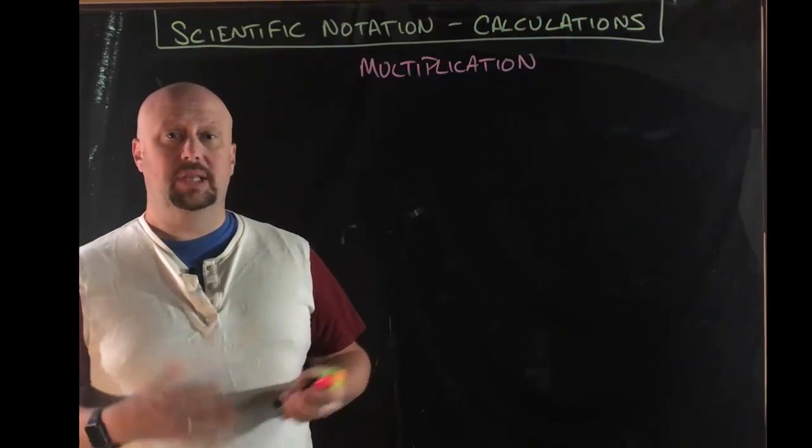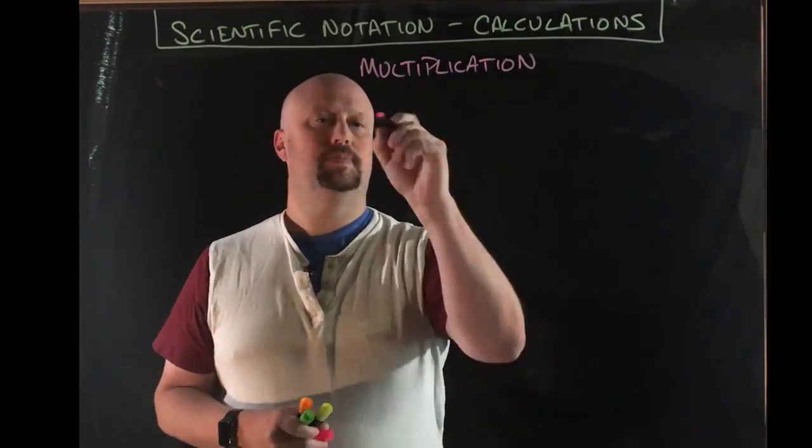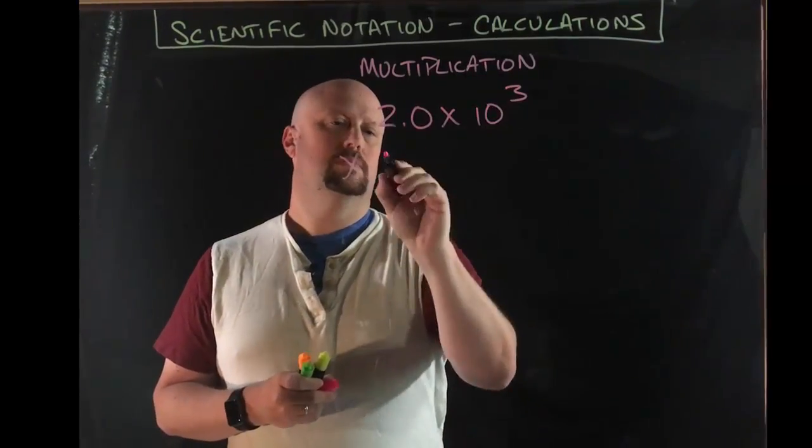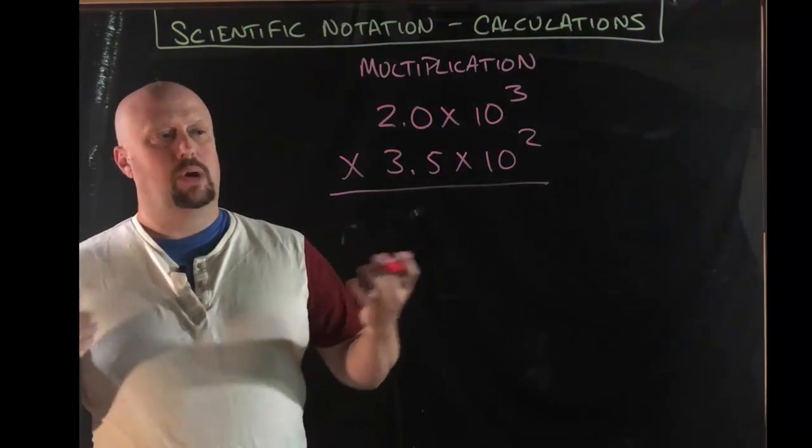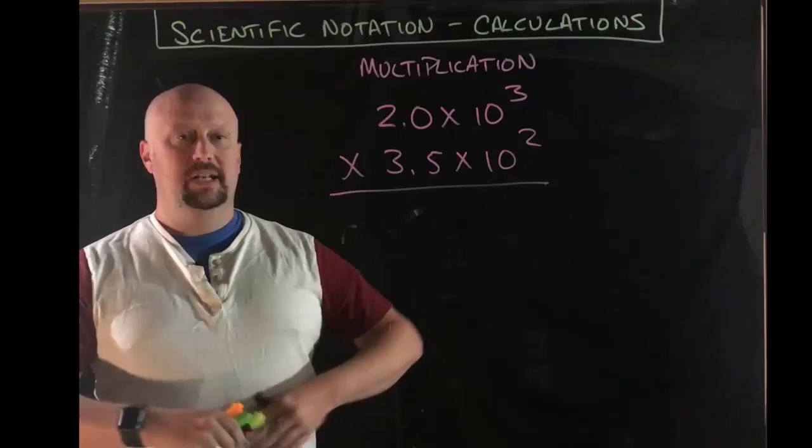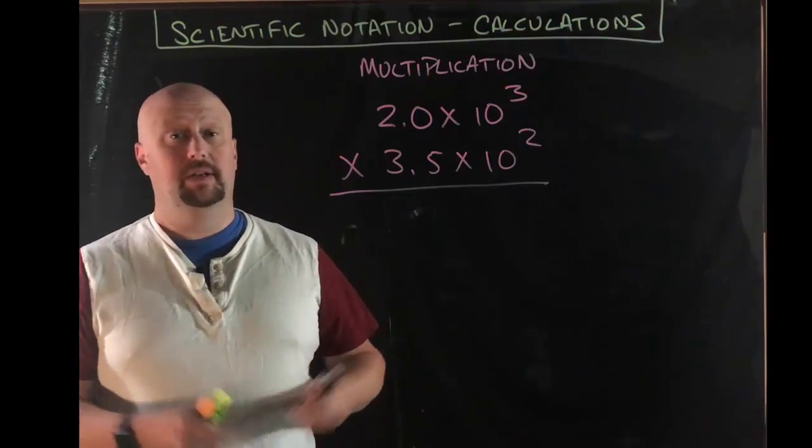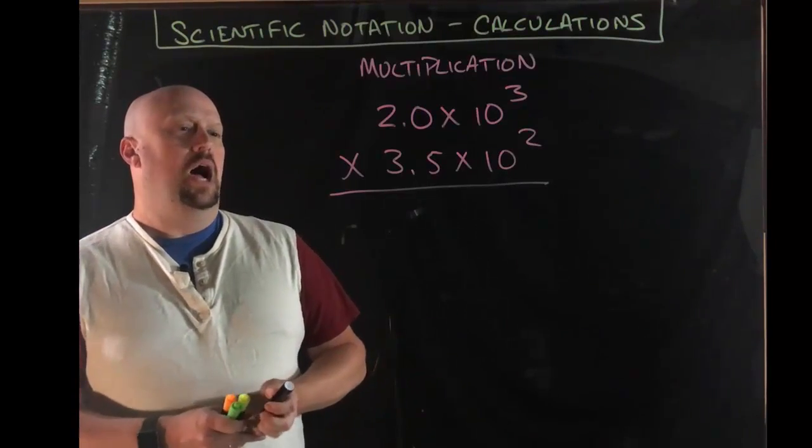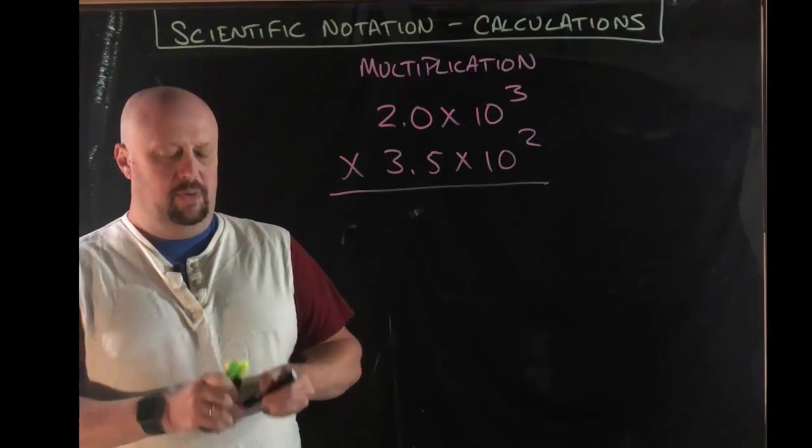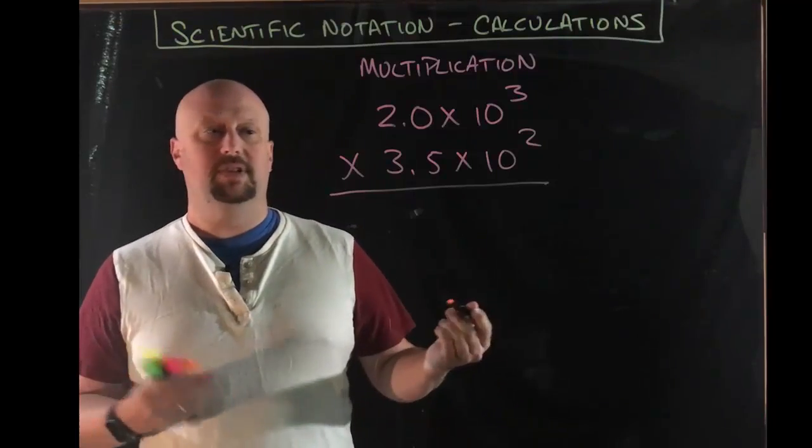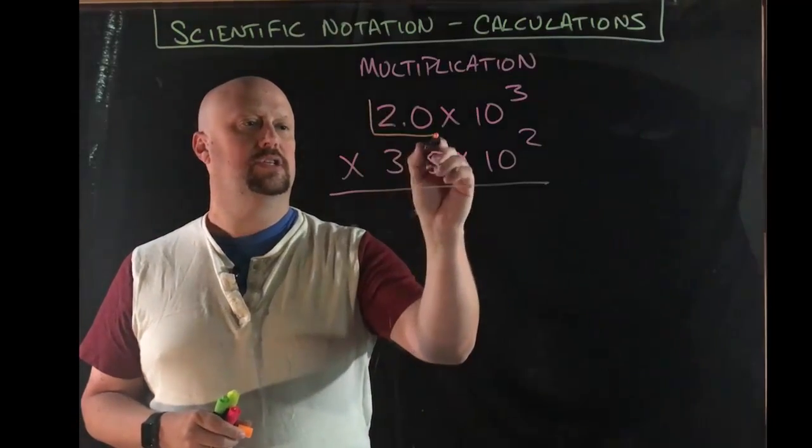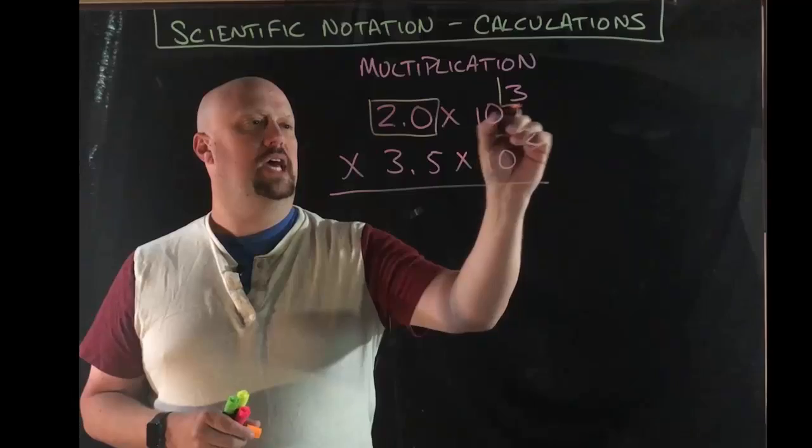So multiplication, let me write the problem down real quick. Two numbers in scientific notation, we're going to multiply them together. Again, this is a scenario that you'll find yourself in hundreds of times this year. And here's the way it works. If you recall from our previous videos, there are two parts to a scientific notation number: there's the coefficient and there's the exponent.